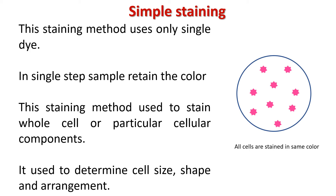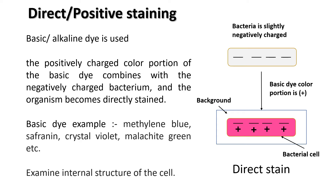In direct or positive staining, a dye that is basic or alkaline in nature is used. Basic dye contains a positively charged color portion. Usually all bacterial cells have a slightly negative charge due to the chemical nature of their cytoplasm when growing in a medium of neutral pH. When basic dye is applied on a bacterial cell, the negative charge of the cell combines with the positive color portion of the dye — as opposites attract — and the organism becomes directly stained. Examples of basic dyes are methylene blue, safranine, crystal violet, malachite green, etc. This type of staining helps to examine the internal structure of the cell.